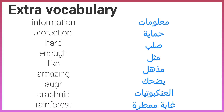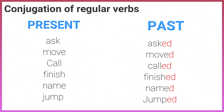Extra vocabulary: information, protection, hard, enough, like, amazing, laugh, arachnid, rainforest. Conjugation of verbs — regular verbs, present and past: ask/asked, move/moved, call/called, finish/finished, name/named, jump/jumped.